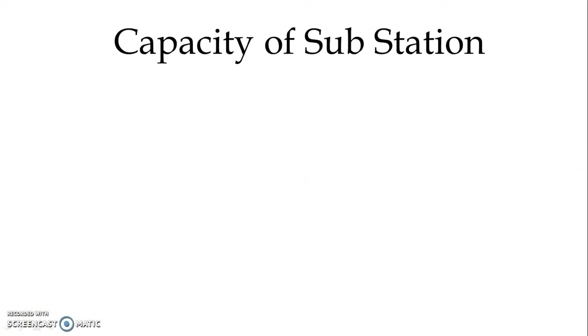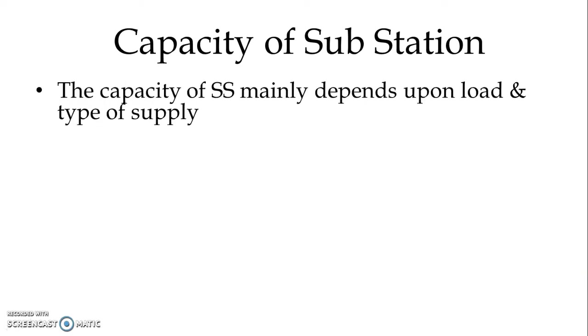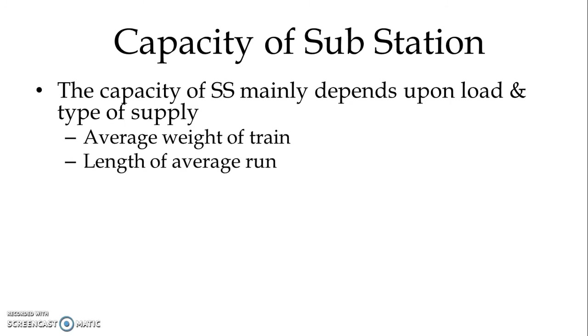Now, capacity of substation: we have certain factors based on which we can decide the capacity of the substation. The capacity of a substation mainly depends upon the load and type of supply — that is, whether AC supply or DC supply — and also the average weight of the train.